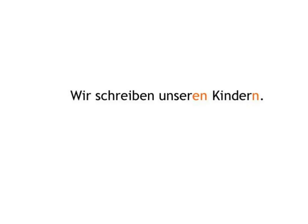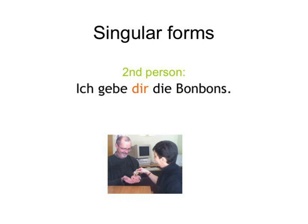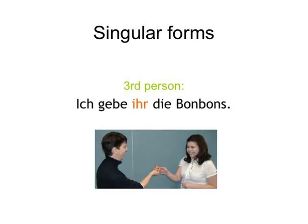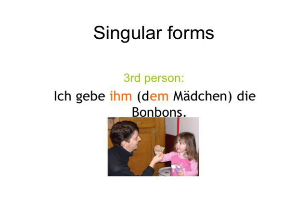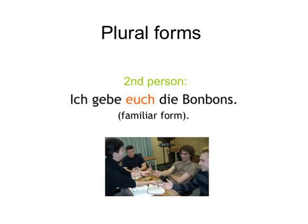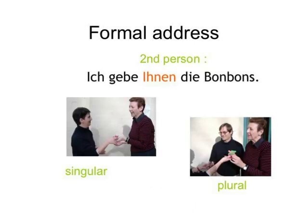And again, as in the accusative, the personal pronouns have a special dative form too. Let's use some German lollies to illustrate. Bonbons sind lecker! Ich gebe mir die Bonbons. Ich gebe dir die Bonbons. Ich gebe ihm die Bonbons. Ich gebe ihr die Bonbons. Ich gebe ihm — dem Mädchen — die Bonbons. Ich gebe uns die Bonbons. Ich gebe euch die Bonbons — that's you familiar plural. Ich gebe ihnen die Bonbons — formal address, singular and plural.